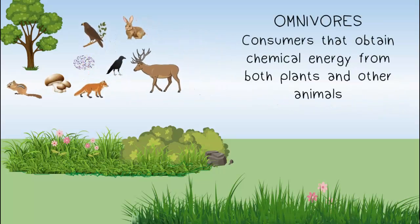A third type of consumer is called an omnivore. Omnivores are consumers that obtain chemical energy from both plants and other animals.